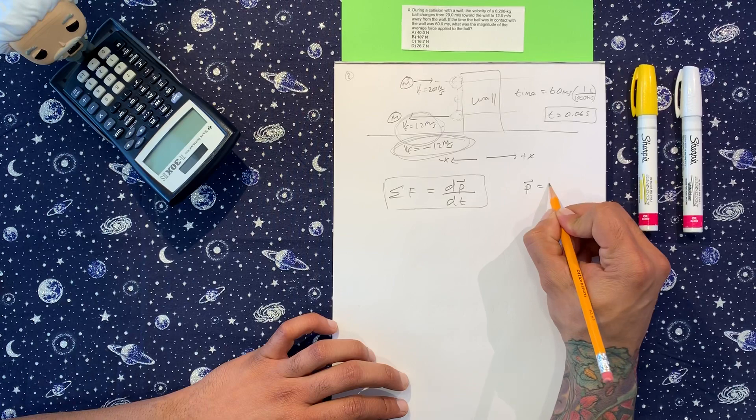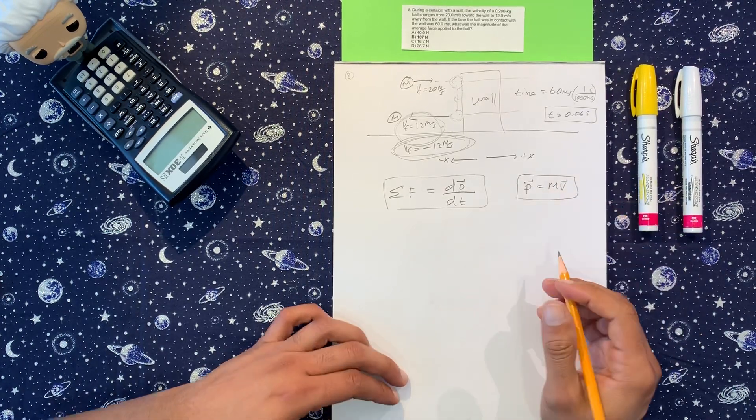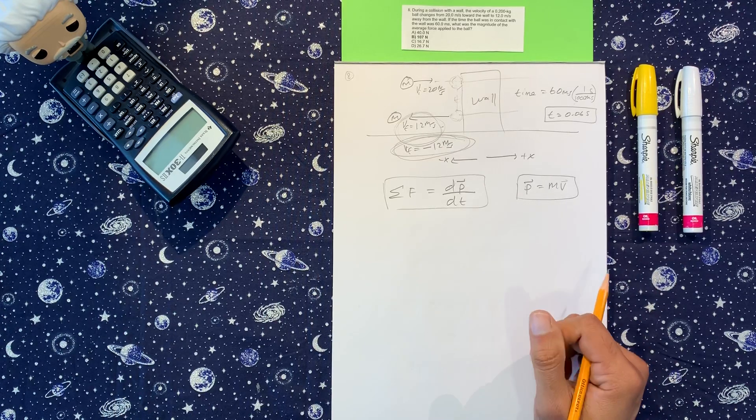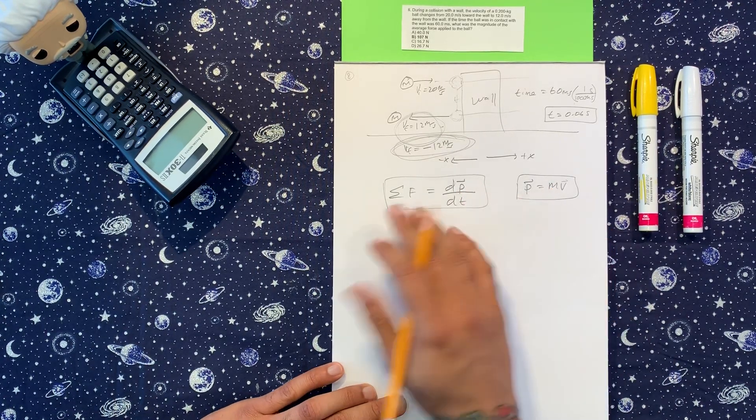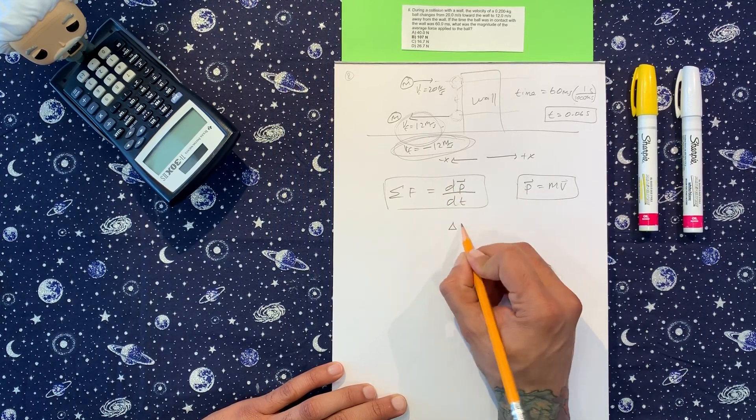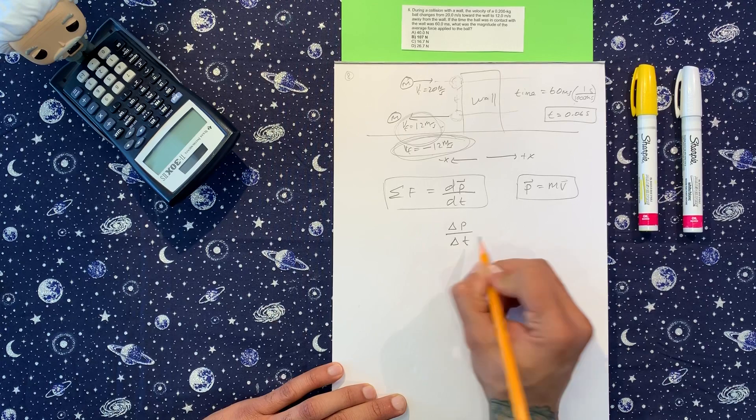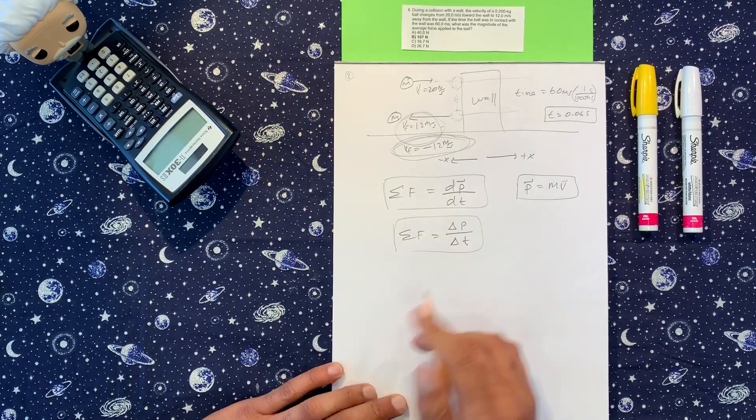So you're going to need this and you're going to need to know what momentum is. So momentum is mass times velocity. We're not going to use calculus for this, so we're going to say the change in momentum, which is denoted like that, over the change in time.